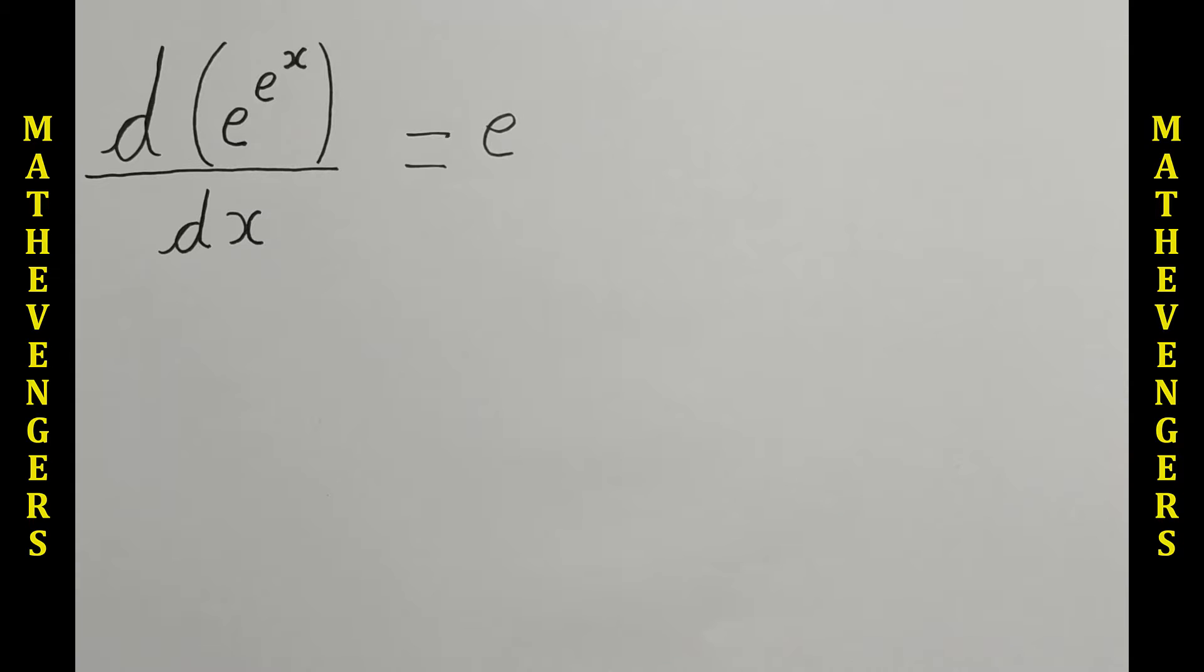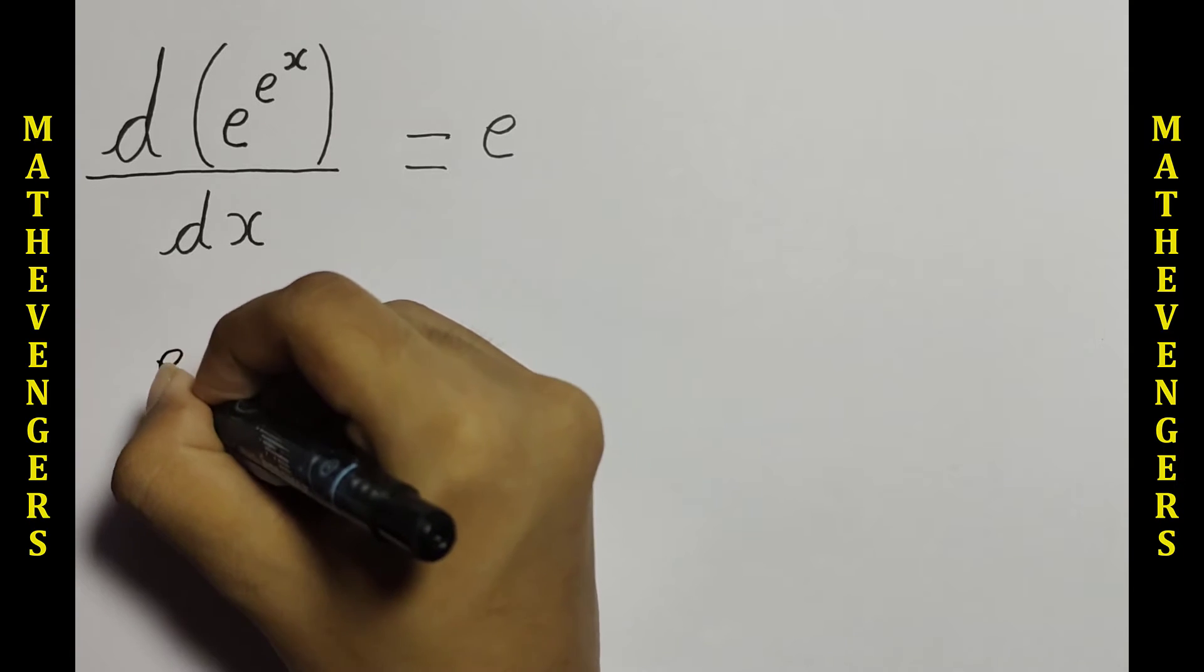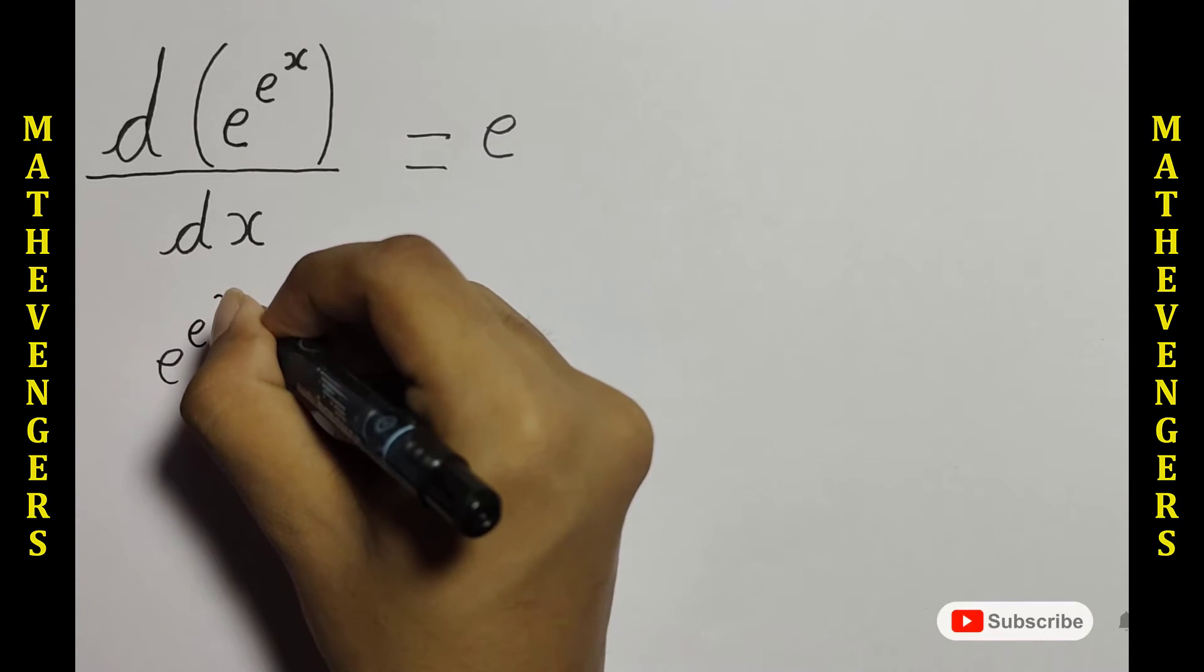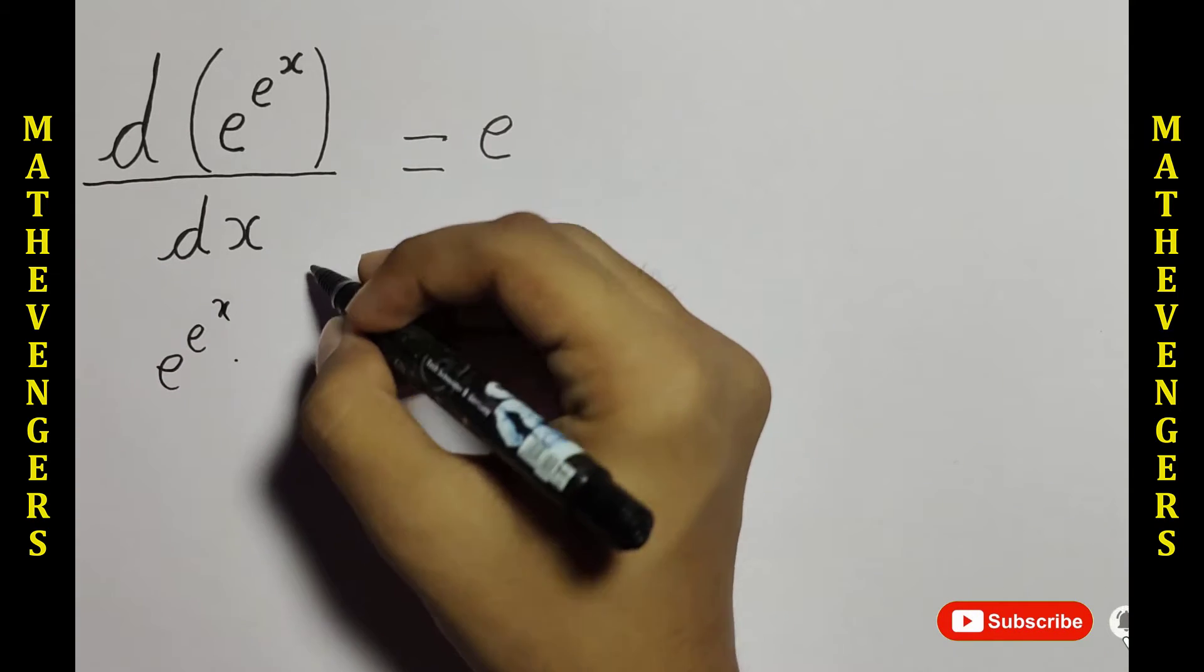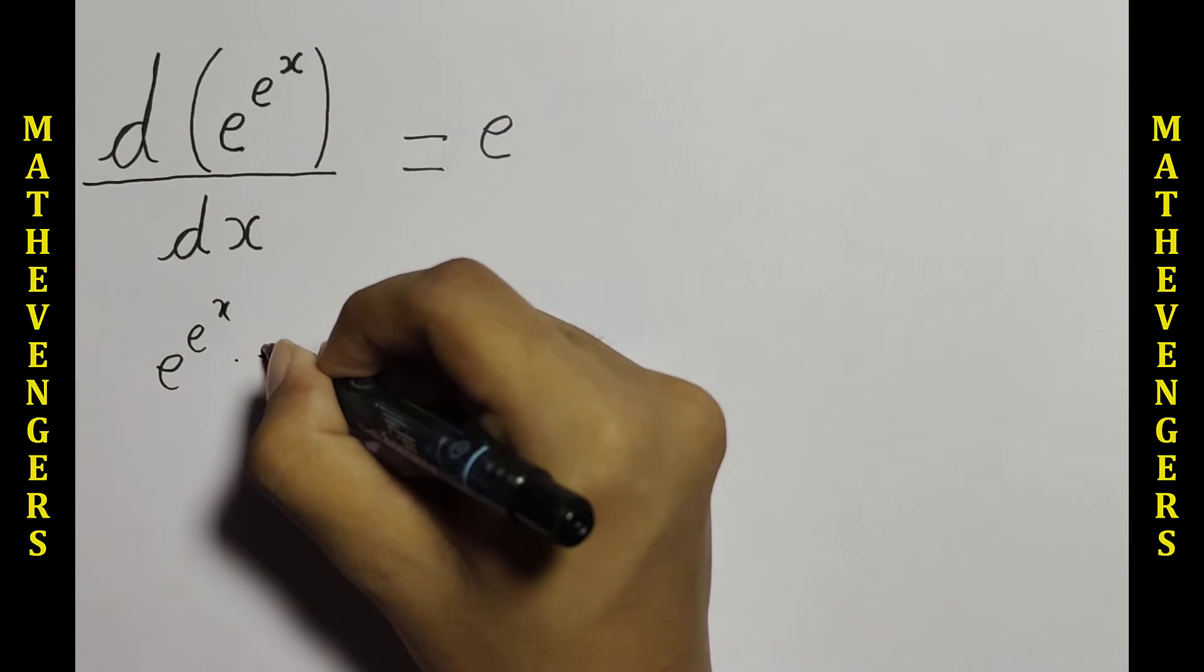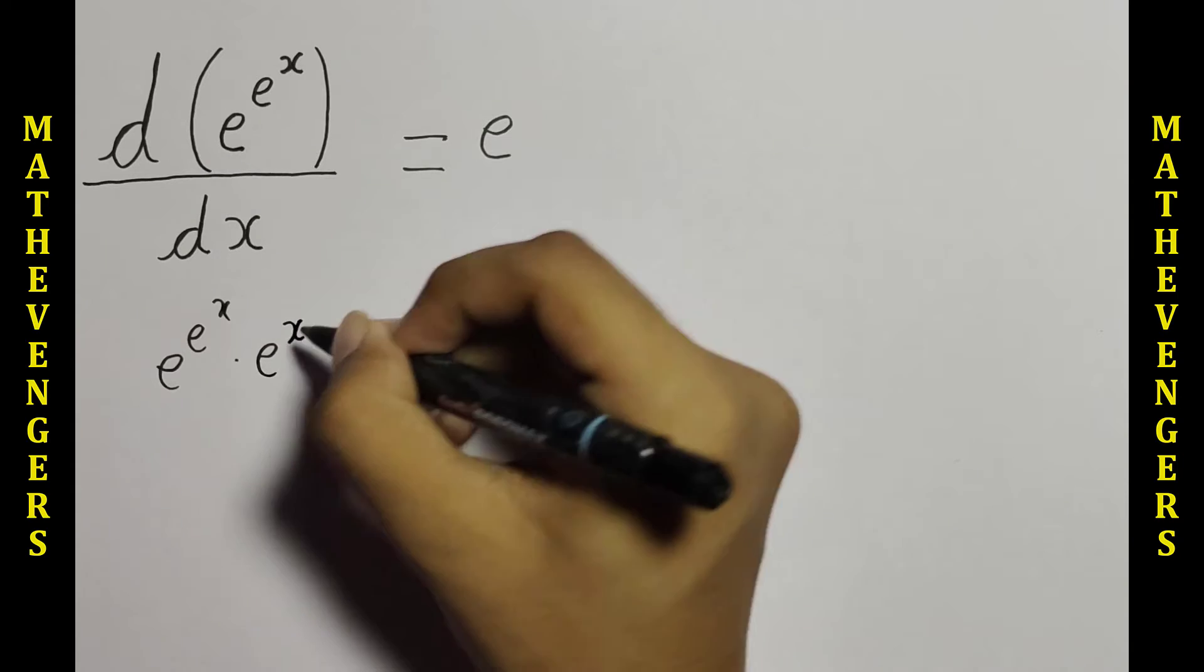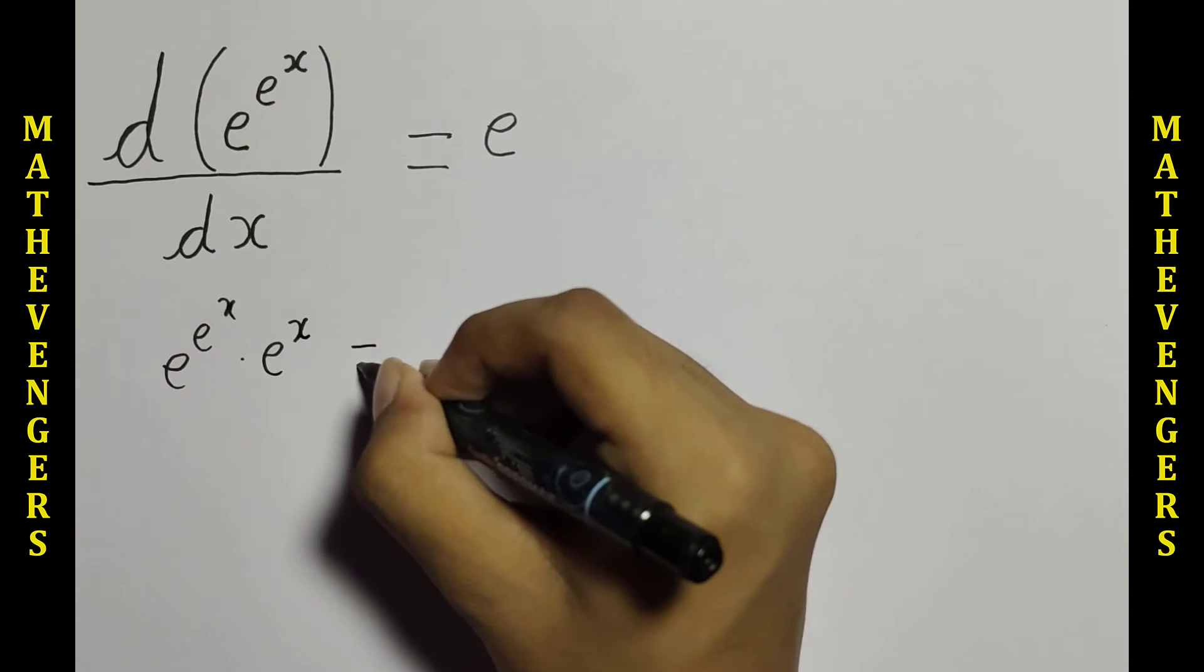We know that differentiation of e to the e to the x is equal to e to the e to the x into differentiation of e to the x, that is e to the x. This will be equal to e.